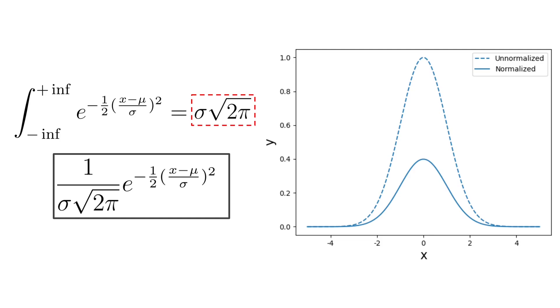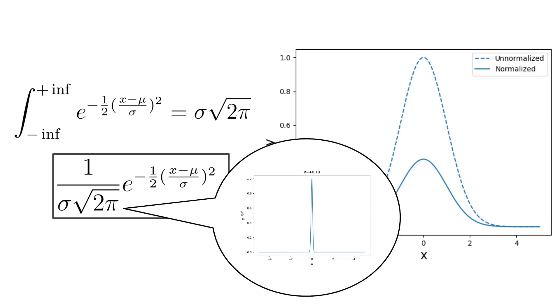One thing that I found particularly interesting about this equation is that the normalizing term contains the standard deviation, but not the mean. Which makes sense, because by shifting the mean of the distribution, we don't change its volume when we integrate from minus infinity to plus infinity, but if we change the standard deviation, then the volume under the bell curve changes.